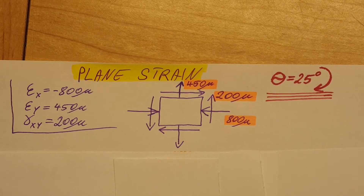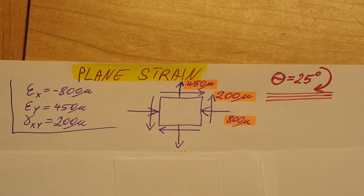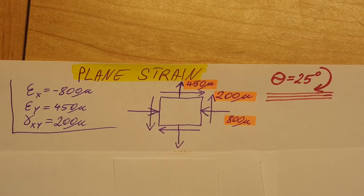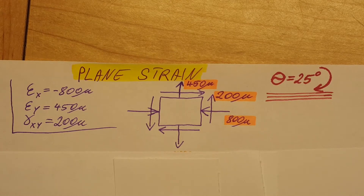In this video I'm going to go over two different ways to solve this problem. One is by using the three large formulas — simply plug in the values and find our results. The second way is by calculating everything through Mohr's circle.